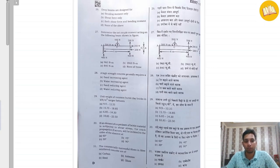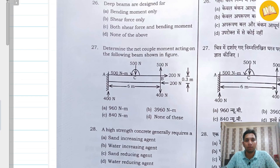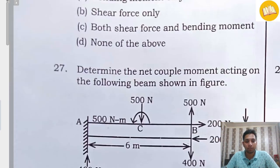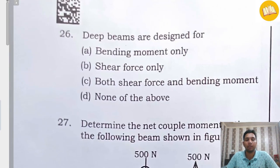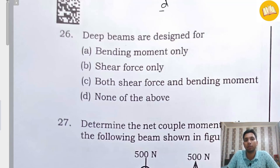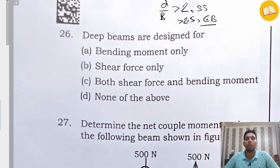Question number 26. As per different institutes, different answers are being given. The question states: deep beams are designed for. We know that deep beams are those beams whose ratio d/b is greater than 2 for simply supported beams and greater than 2.5 for continuous beams. For bending moment, we design only shallow beams in which this criteria is not satisfied.